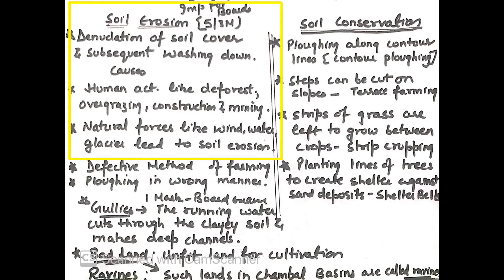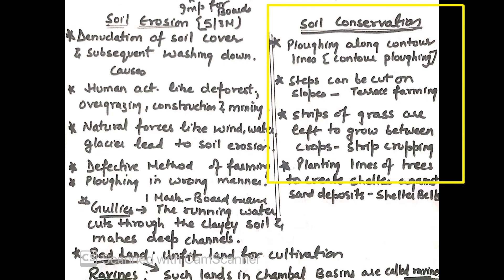Soil erosion means removal of soil cover. Causes for soil erosion: human activities like deforestation, overgrazing, construction and mining activities are responsible. Natural forces like wind, water and glacier also lead to soil erosion. Defective methods of farming and plowing in the wrong manner are also factors.